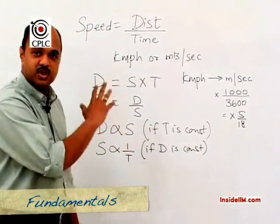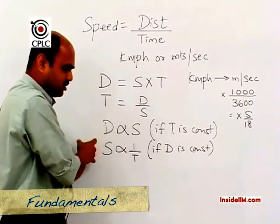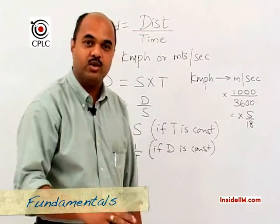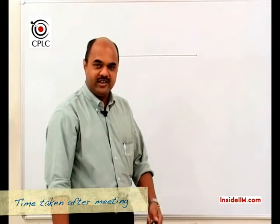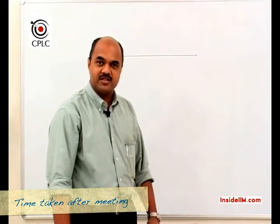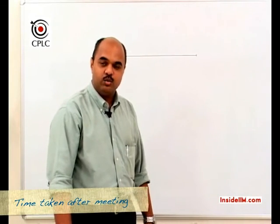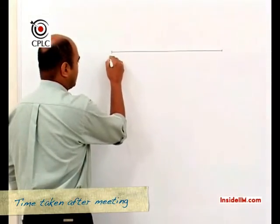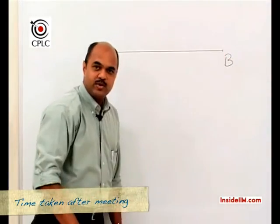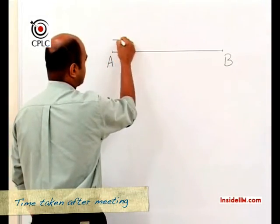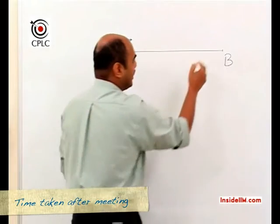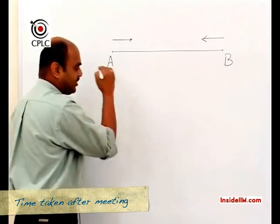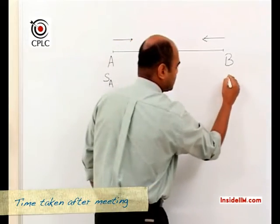These are the basic concepts of speed, time, and distance: the formulae, the variation relationships, and the unit conversions. We've established that if distance remains the same, speed and time are inversely related. Now let's look at a slightly different concept: suppose we have two endpoints A and B with two people starting from each end and moving towards each other.